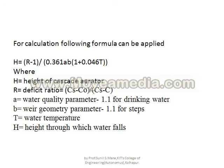The design calculation formula is: H = (R − 1) / (0.361 × A × B × (1 + 0.046T)). This formula may not be found in standard textbooks but is used for the best design of this type. H is the height of the cascade aerator, in meters.